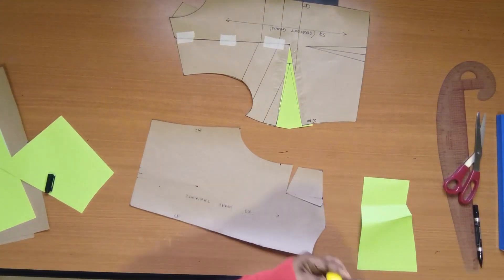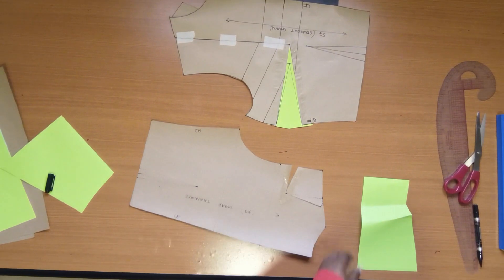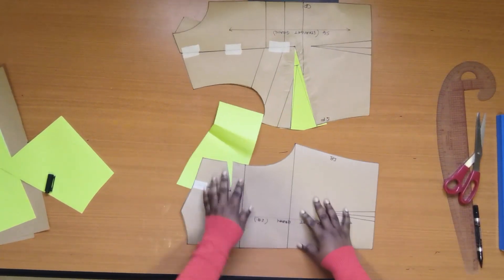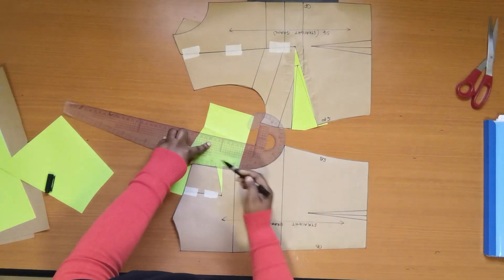Place a paper underneath and redraw the armhole. This manipulation adds a little ease to the armhole. It is not sewn.